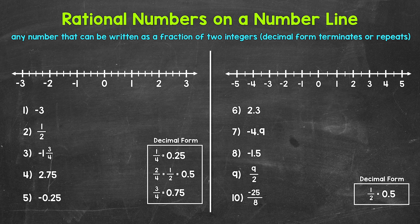Looking at this number line — and any number line really — we need to understand that if we look at zero, we have positives to the right and negatives to the left. So starting at zero, positives to the right, negatives to the left. As far as moving along a number line, moving right or up a number line, we increase in value. Moving to the left or down a number line, we decrease in value.